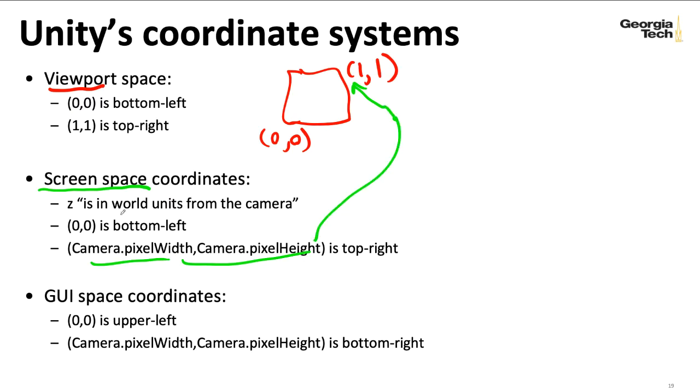And then there's also, in this setup, there is a z-coordinate. And this is, in quote-unquote, world unit coordinates from the camera. So notice that these have different units.